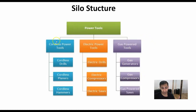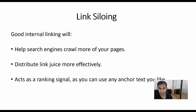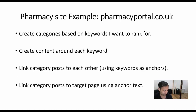Similarly you could split it up in terms of saws, drills, and compressors and do it that way. The point is you want to group together like for like. The next thing to consider is how your internal linking is going to be set up, which is link siloing. This is going to help search engines crawl more of your pages, it will distribute link juice more effectively, and it will act as a ranking signal so you can be a bit more aggressive with the use of your anchor text. My personal favourite method is to do it using a category silo.